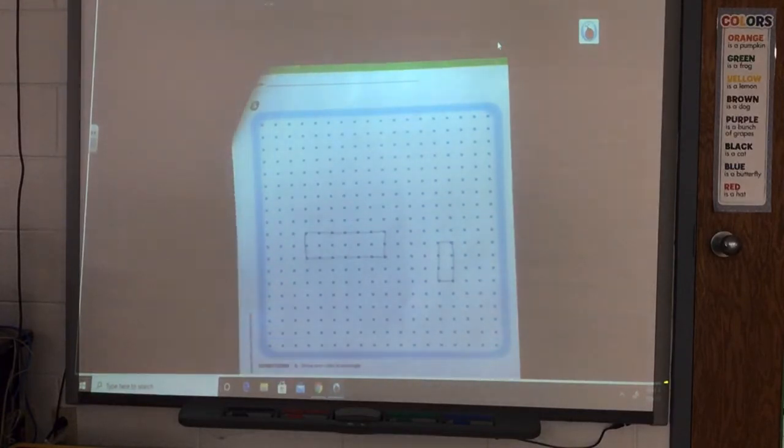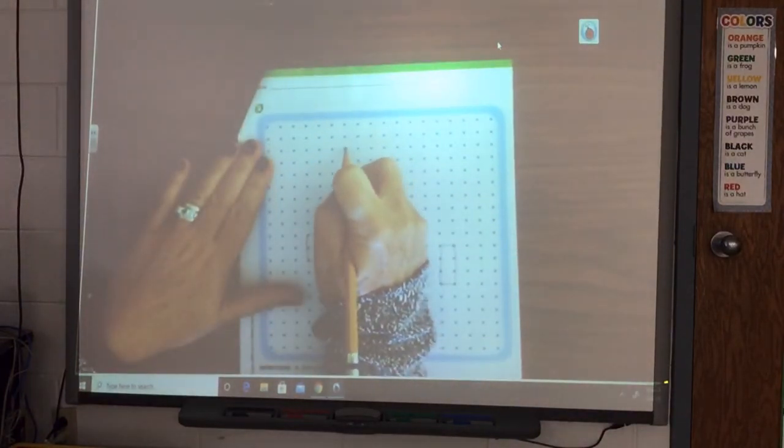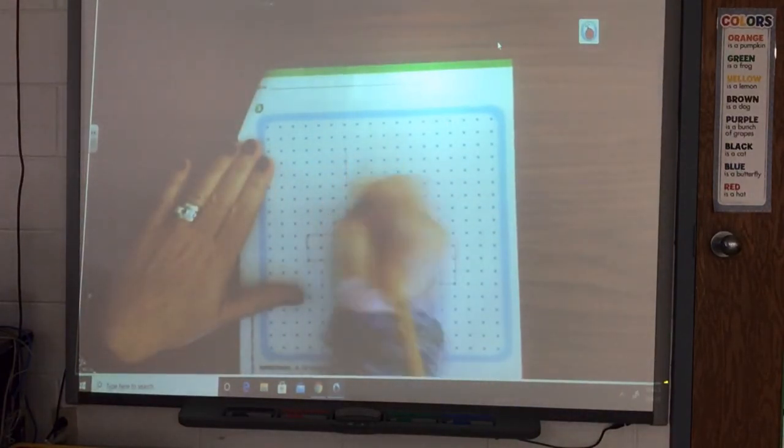There's a little rectangle. Two short sides, two long sides. So just practice drawing a couple of them. They don't have to be perfect.